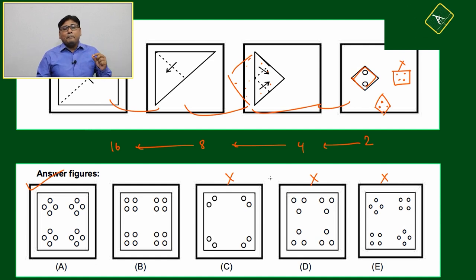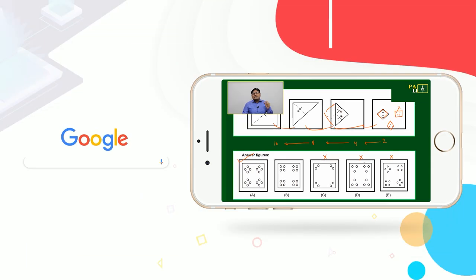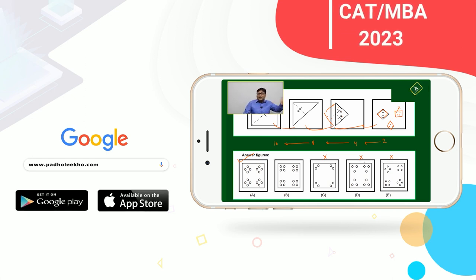But once you understood this folding-unfolding concept—how many holes can multiply in next unfolding or how many holes can reduce in next folding—then things will become much easier.